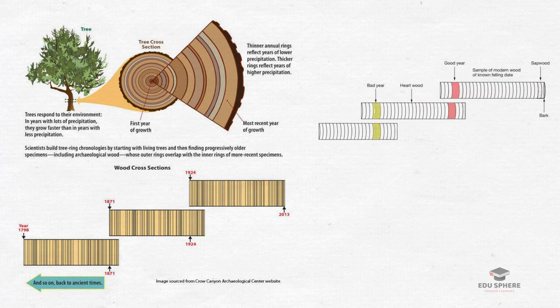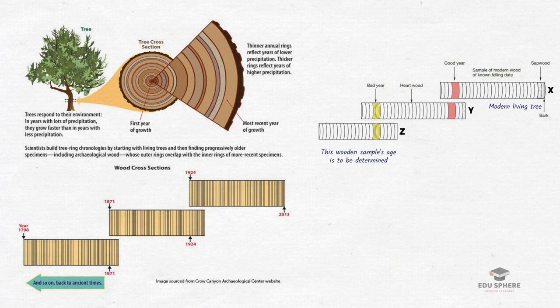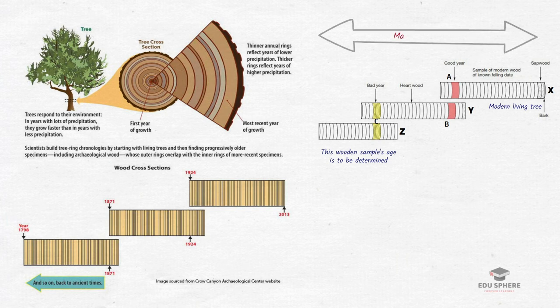This diagram shows how the annual growth rings can be counted, matched and overlapped to build up a master sequence. Let us say we have three tree samples x, y and z. X is a modern living tree, the youngest of the three, and z is the archaeological wood sample whose age is to be determined. We compare the annual tree rings of the three samples. At point a, the ring pattern of the modern wood matches with point b of the relatively older wood sample y. Similarly, at point c, the ring pattern of y matches with the outer ring of sample z. In this process of overlapping, we have built up a long master sequence.